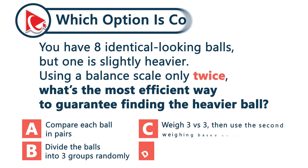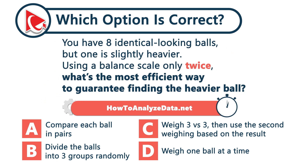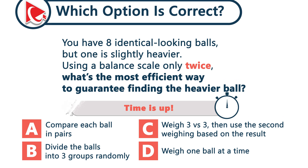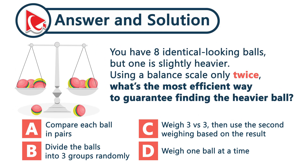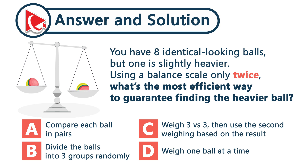You've got eight identical-looking balls, but one is slightly heavier. You only have two chances with the balance scale to find the heavier ball. What do you do? Start by weighing three balls versus three balls. If they're equal, the heavy one is in the remaining two. If one side is heavier, weigh two balls from that group. The result will lead you straight to the odd one out. The correct answer is choice C.